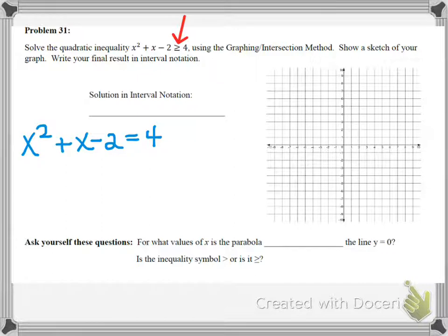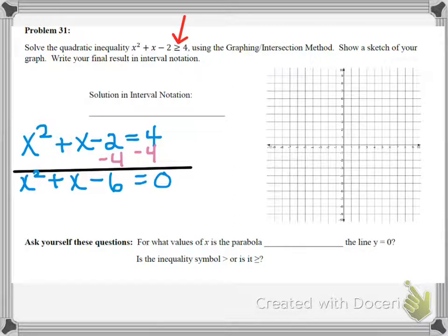So I have x squared plus x minus 2 equals 4. Now we want to put it in standard form and we do that by subtracting 4 from both sides. So that leaves us with x squared plus x minus 6 equals 0.